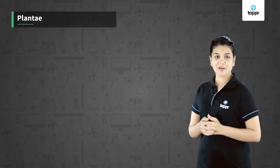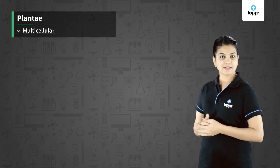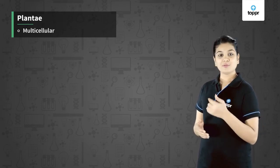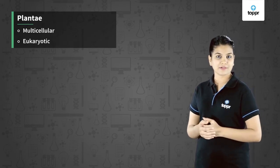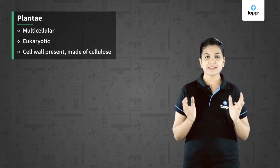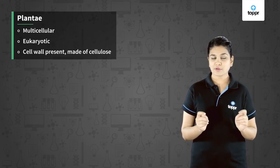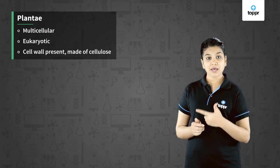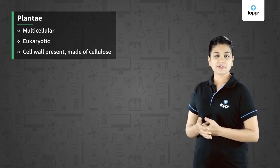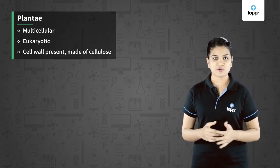This group of plants consists of multicellular organisms. These are eukaryotic. They possess a cell wall which is majorly made up of cellulose. In fungi the cell wall was made up of chitin, but in plants this cell wall is made up of cellulose.